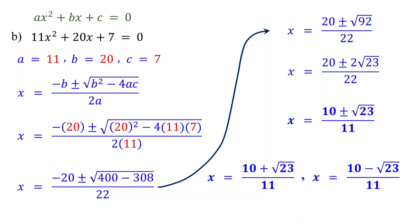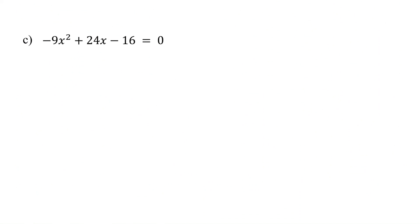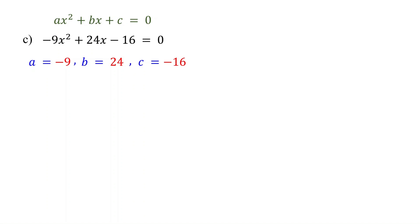Notice that both this example and the previous one have 2 real solutions. This happens when the number inside the square root is greater than 0. In the next example, we will consider a case where a quadratic equation has only 1 real solution. Since it is in standard form, first identify the values of the coefficients: a is negative 9, b is 24, and c is negative 16.